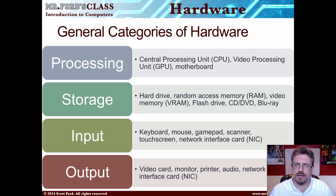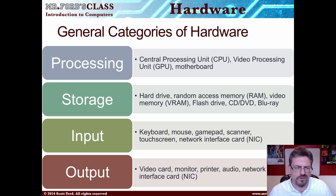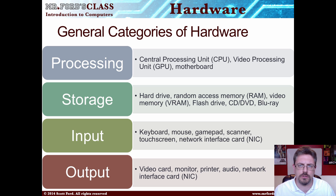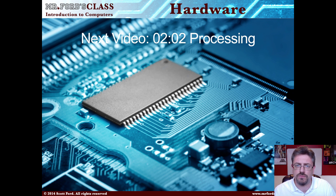So processing, storage, input, and output are our four primary categories of hardware. There's also some hardware that fits into a miscellaneous grouping — for example, the computer case, which holds the parts of the computer. It's technically hardware but doesn't fit neatly into any of those four things. Another example is the power supply, which is required for all four categories to work. But our big four categories are processing, storage, input, and output. In the next video, we're going to take a look at that first category — processing.